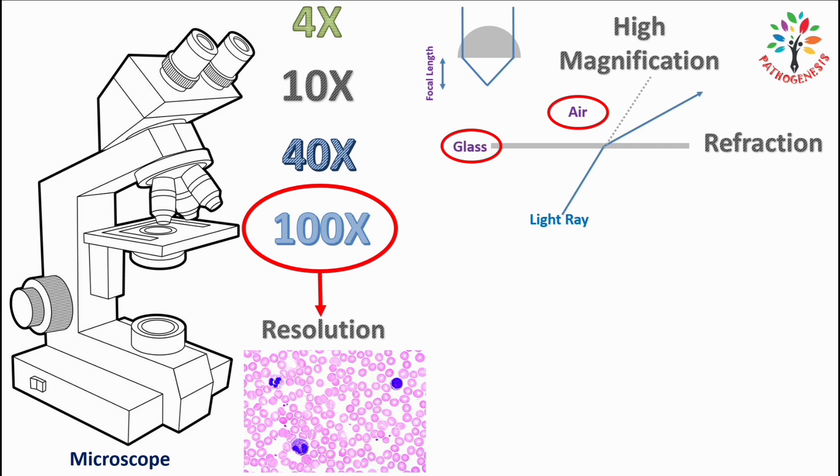Now let's look at the 100x objective. This is the objective lens of 100x. This is the glass slide. Light is passing through the glass slide. Because of refraction, the direction of the light will change once it enters the air from the glass. As a result there will be loss of light and sufficient light won't enter through the objective lens.